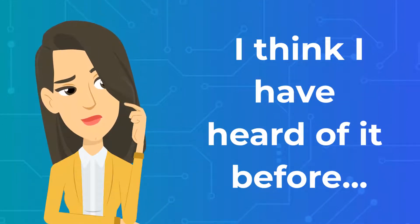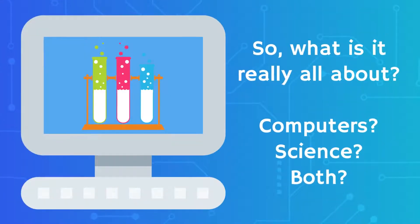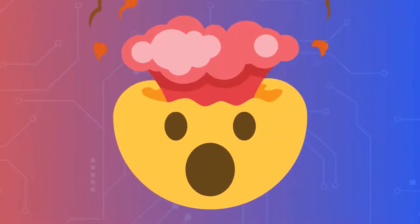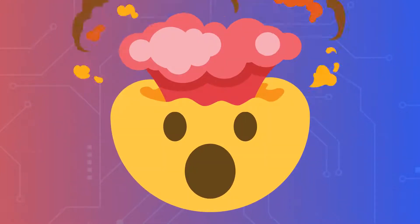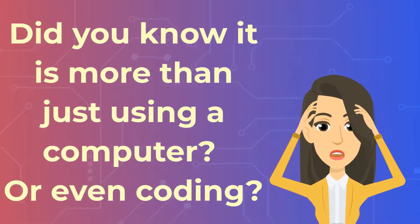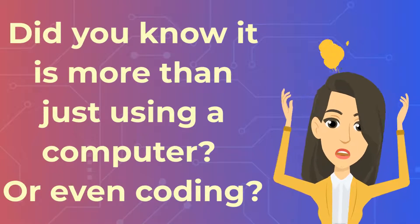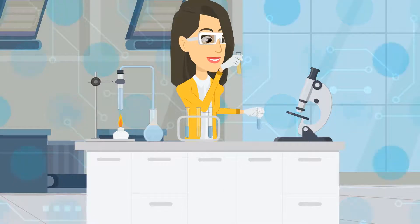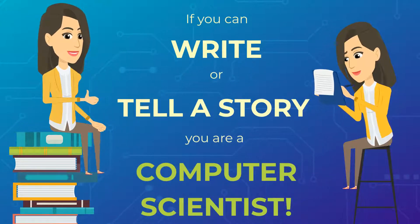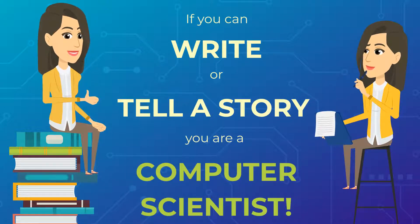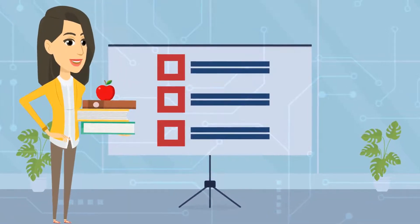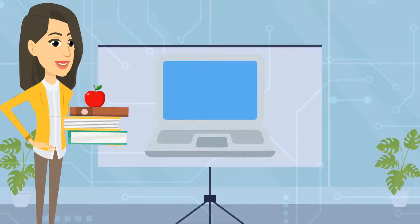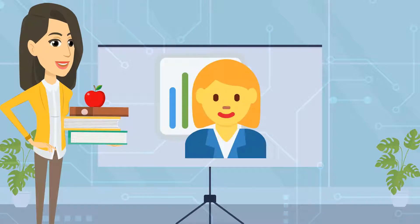What is this computer science thing that everyone keeps talking about? We all know what a computer is and what we can do with it, but what does science have to do with it? Get ready to have your mind blown. Did you know that computer science is so much more than just using a computer or even coding? And it actually does use science like engineering. If you can write or tell a story, you are already a computer scientist, because that tells me that you have a desire to express your thoughts and ideas in a unique way that might change the way someone else approaches a problem or situation.